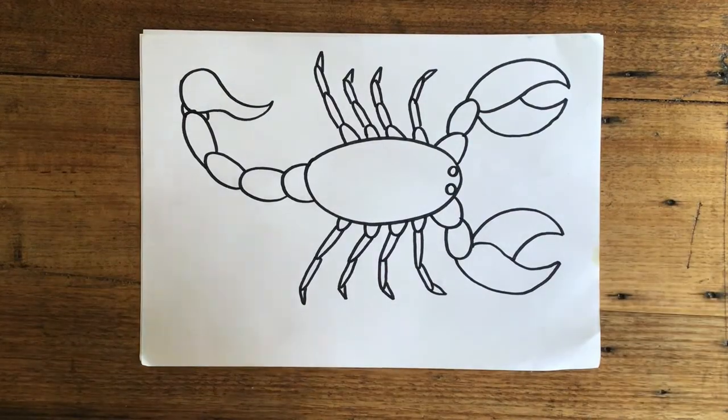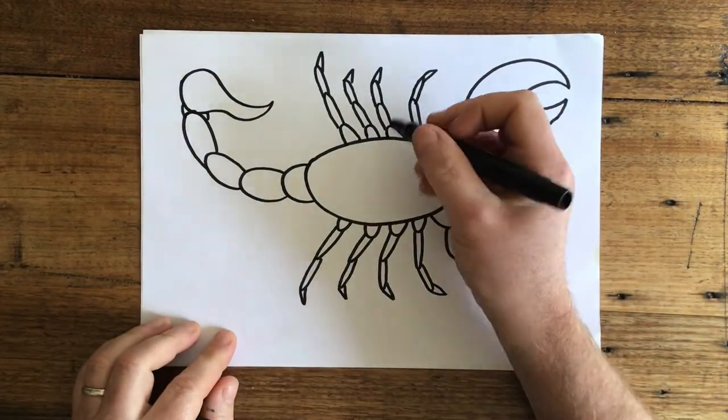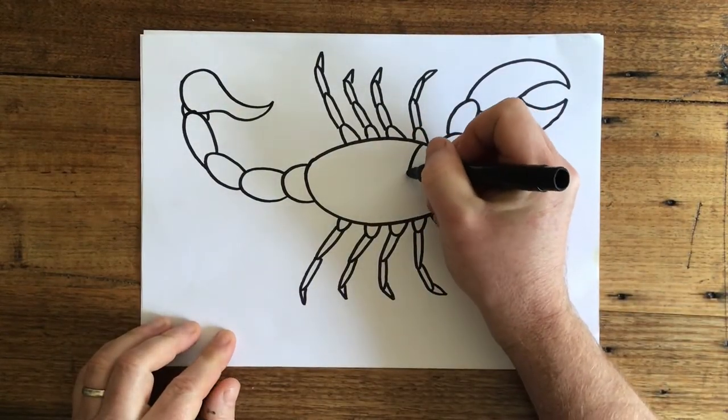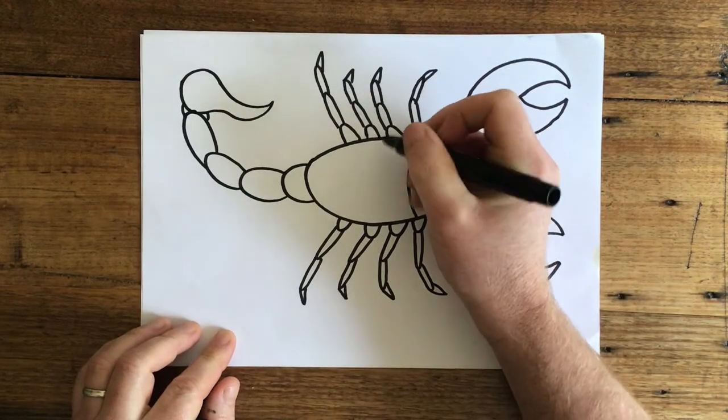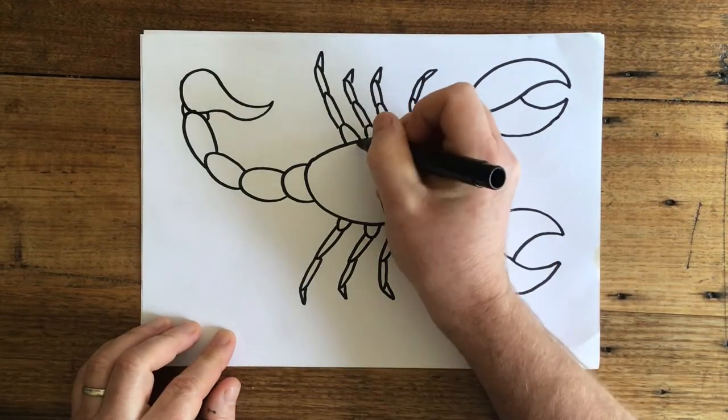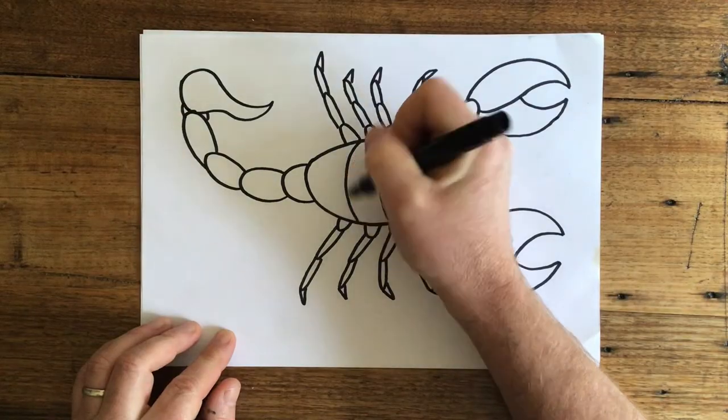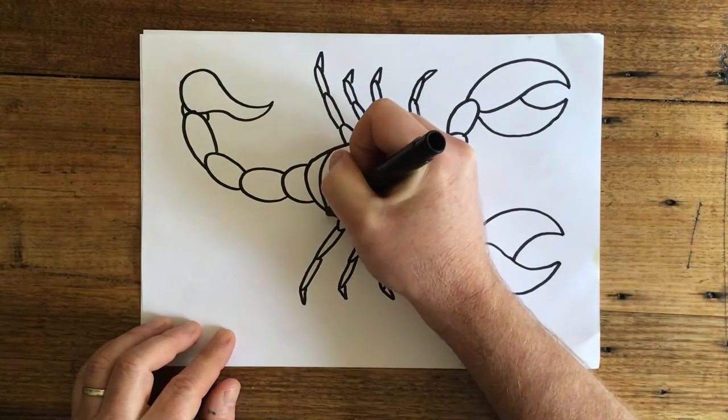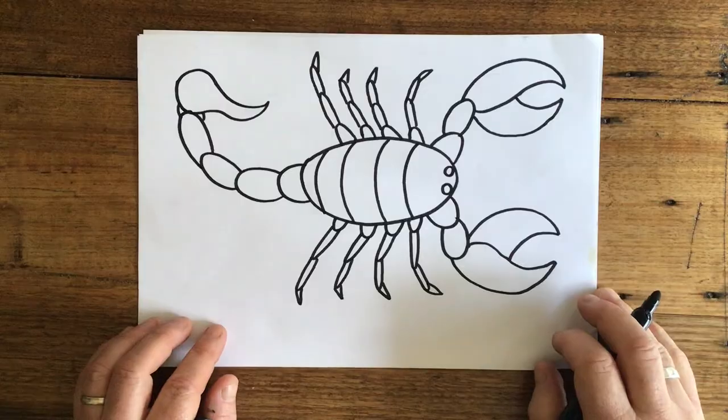And now we're just going to put some lines on its back. Like this. Let's go one, two, three, four lines across its back.